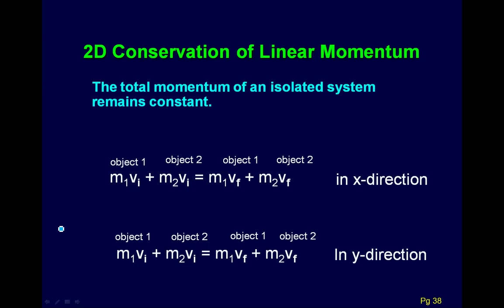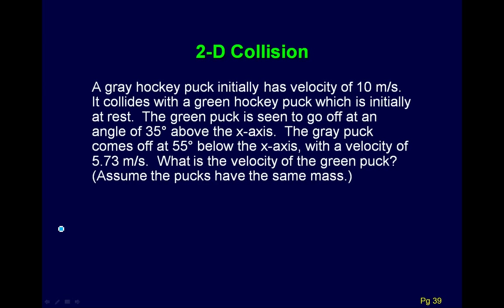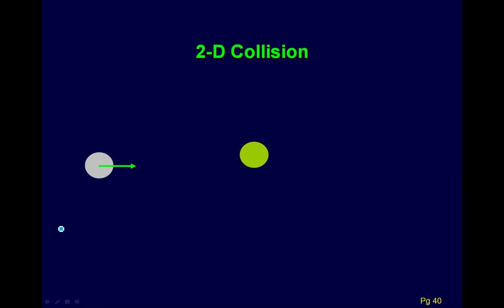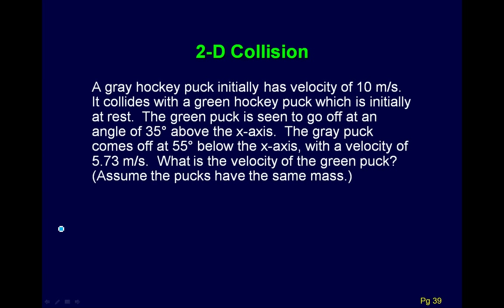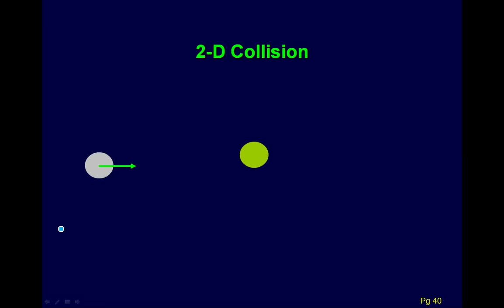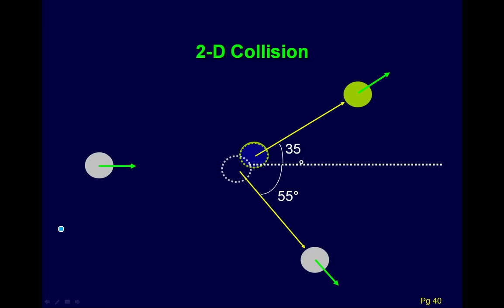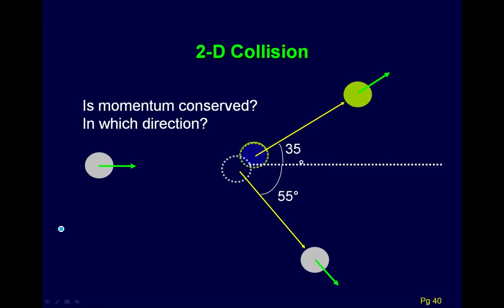That's one dimension. We can also have these problems in two dimensions, where the math gets a bit trickier — but all that means is we have the same equation twice: once in x and once in y. Here's a typical two-dimensional example with hockey pucks. A gray hockey puck initially has a velocity of 10 m/s. It collides with a green hockey puck initially at rest. The green puck goes off at 35°, and the gray puck comes off at 55° below the x-axis with a velocity of 5.73 m/s. We want to find the velocity of the green puck.